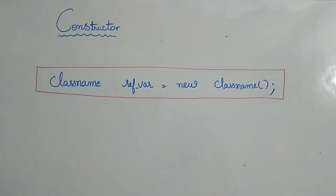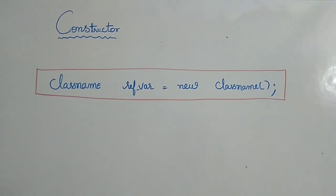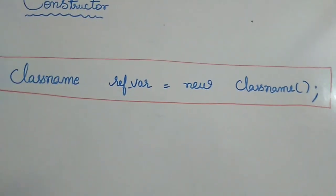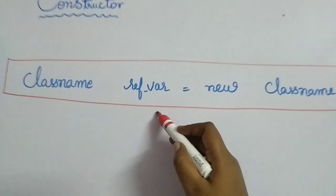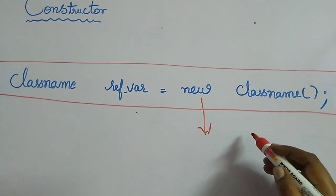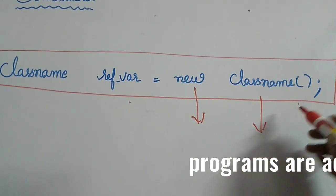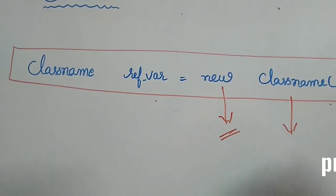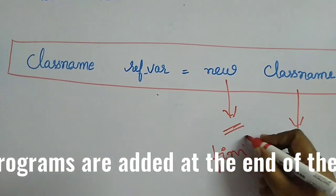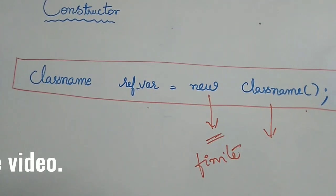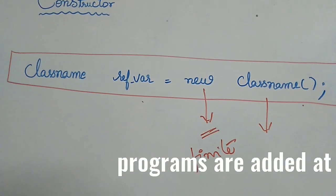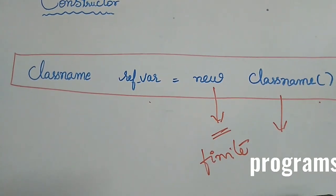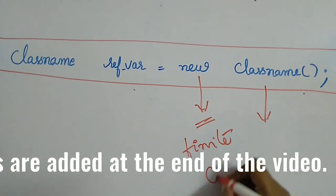Welcome back to another session of core Java tutorials. Today we'll see constructors. In the previous class I discussed how to define a class and how to create objects. This is the syntax for creating an object: the class name, then the reference variable, then the new operator for allocating memory on the heap. One thing to keep in mind about the new operator is that it will not always allocate memory, because memory is finite. If the JVM is not able to create memory for the object on the heap, it will give an OutOfMemoryError.